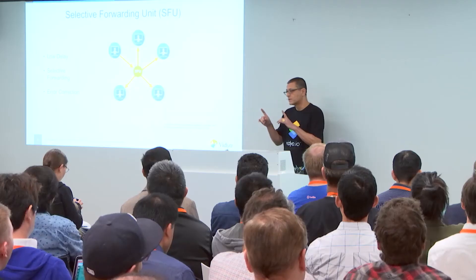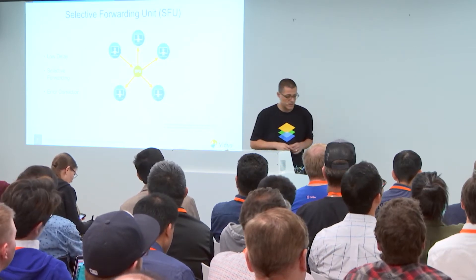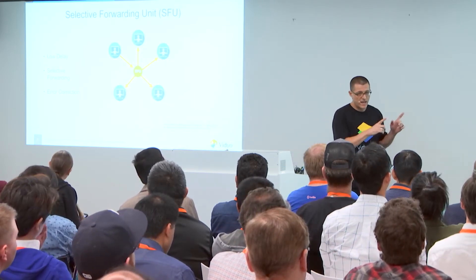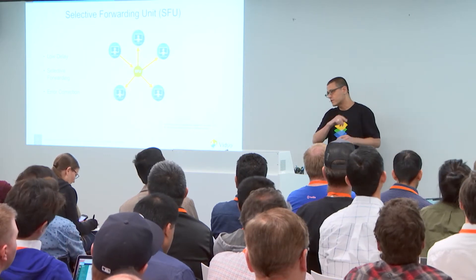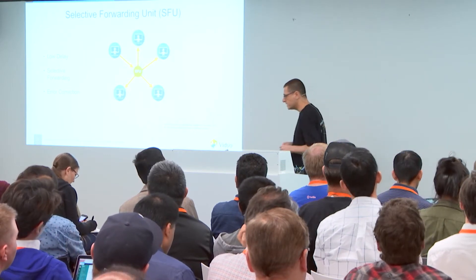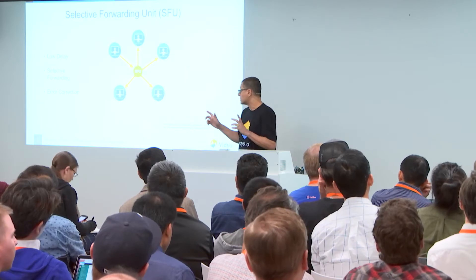An SFU also corrects errors. Many transmission errors that occur on the downlink to one of the endpoints can be corrected at the SFU without impacting anybody else on the call. So an SFU localizes the error correction only between itself and the endpoint that's experiencing those errors.